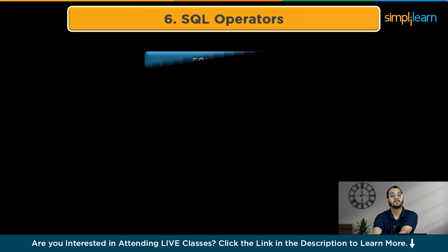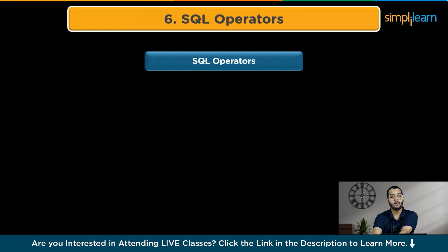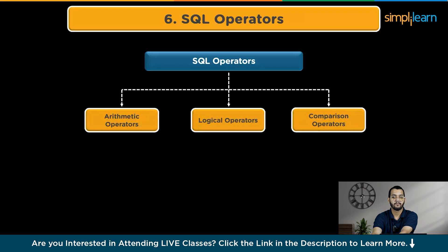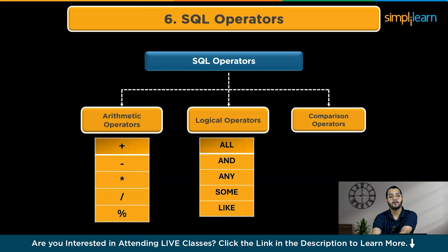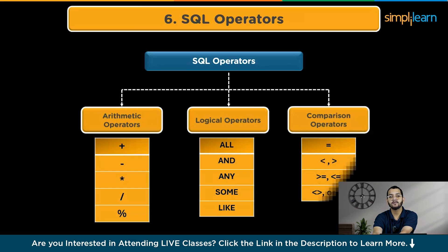The next step is to know the types of SQL operators. SQL operators are symbols used for performing different operations on databases. The main types are: arithmetic operators, used for addition, subtraction, multiplication, division, exponential, and modulus operations; logical operators, used to combine two or more relational statements, like ALL, AND, ANY, SOME, and LIKE; and comparison operators, used to compare the contents of a field with another field or a constant.